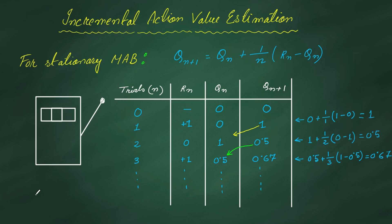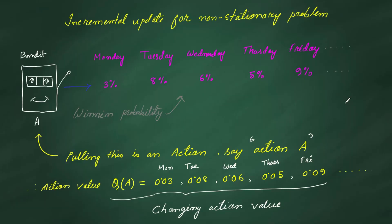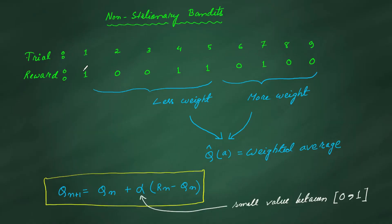In the earlier video we discussed the stationary multi-arm bandit problem. In this video we discuss the non-stationary multi-arm bandit problem. In non-stationary problems, the action value of a particular action changes over time — meaning the internal programming of the winning rate of the machines changes with time. In that case, we cannot estimate the action value by simply taking the average over rewards.